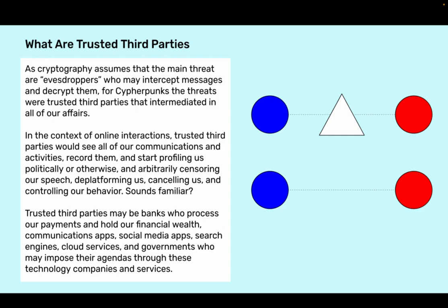Sounds familiar? Trusted third parties may be banks who process our payments and hold our financial wealth, communications apps, social media apps, search engines, cloud services, and governments who may impose their agendas through these technology companies and services.